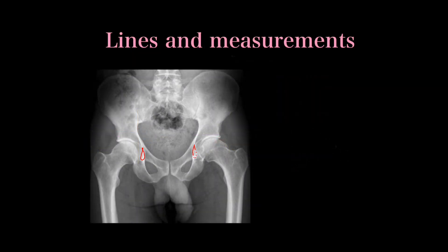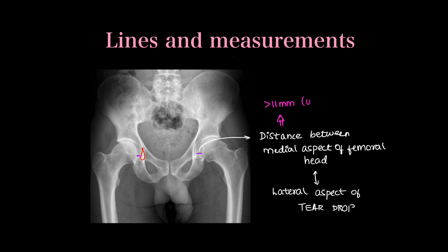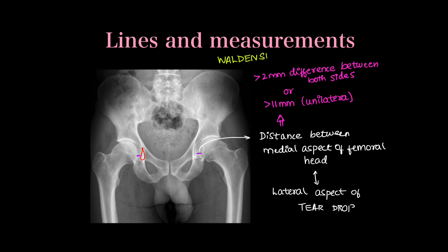Before the Waldenström sign, we note that a normal AP hip x-ray shows a teardrop shape at the intersection of lines. We measure the distance between the medial aspect of the head of femur and the lateral aspect of the teardrop. If this distance is more than 11 mm unilaterally, or if there is a difference of more than 2 mm between both sides — which is more relevant and reliable — then the Waldenström sign is positive. An increased distance is a highly specific sign for hip effusion on that side.